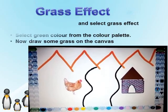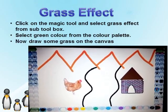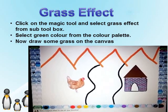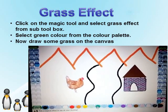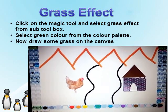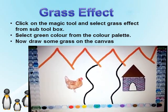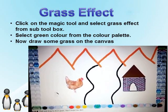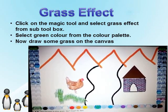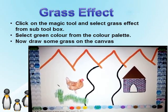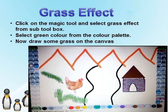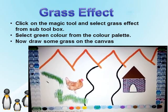Using Grass Effect: It is used to give a grass effect in the drawing. Click the magic tool and select the grass effect from the sub toolbox. Select green color from the color palette. Now draw some grass by clicking on the canvas.